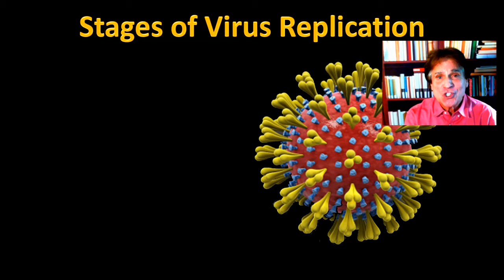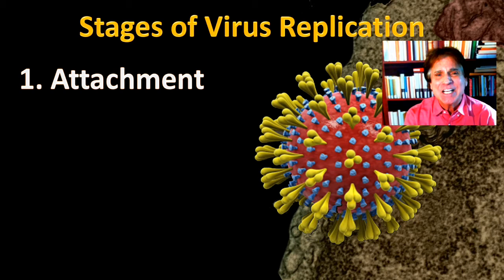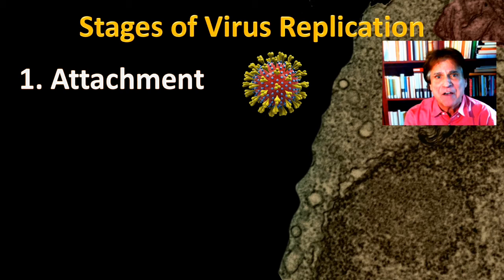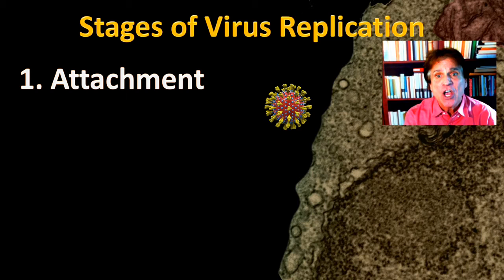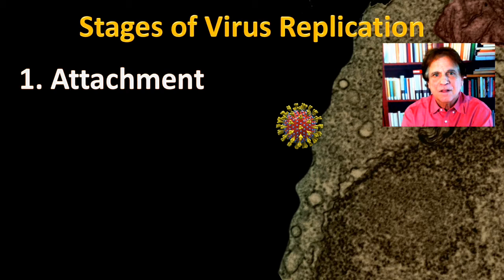The first stage of virus replication is called attachment, and that is when the virus particle, the virion, attaches to the surface of the host cell. For example, I have here an image that represents SARS-CoV-2, the virus that causes coronavirus disease, and beneath it we'll place an example of a target cell. We need to make them at the correct scale, so we need to shrink down that virus. During the attachment stage, that virus will land on the surface of this cell. At this point, the spike proteins, the S proteins, that are found on the virus envelope will make contact to an enzyme on the surface of the host cell. Once that contact is established, we begin the infection process.